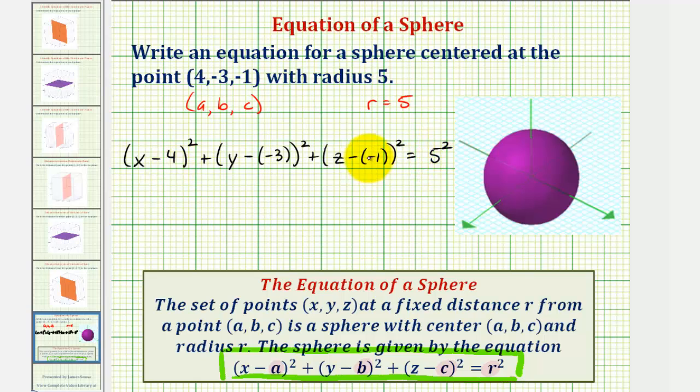Let's go ahead and simplify this. We'd have the quantity (x - 4)² plus, here we have minus negative three that becomes plus three. So we have the quantity (y + 3)² plus this becomes (z + 1)² equals 25.